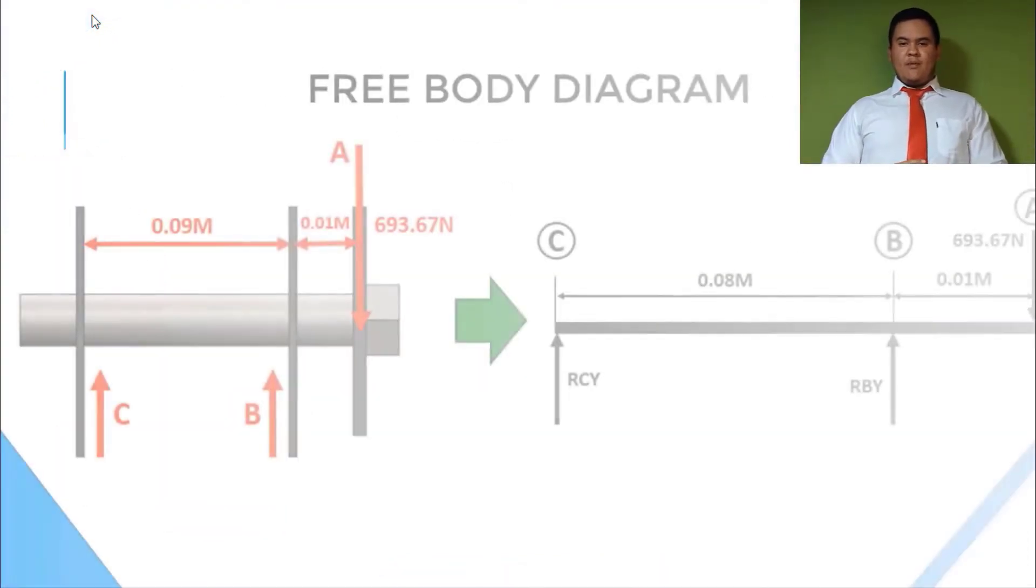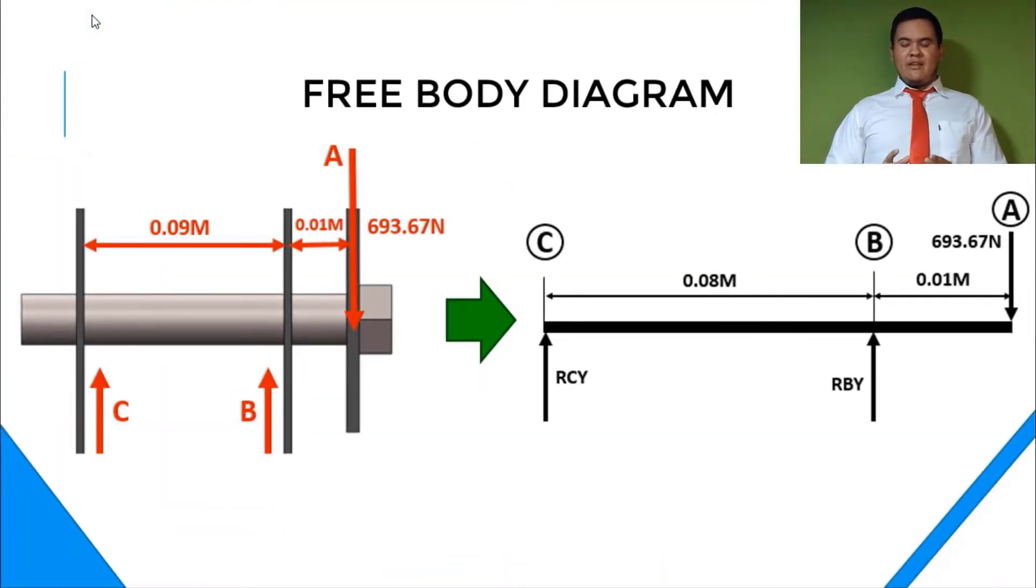The free body diagram shows us how the forces are applying directly in the bolt. We can see the principal force are applying in y side of the bolt and we have two other forces that we don't know which are C and B. With the help of this diagram we can calculate those volumes with a static analysis and know what is those volumes that are in C and B. So you can see those forces are applying in different lengths, different sides. They are in 0.01 meters and the other is in 0.09 meters.